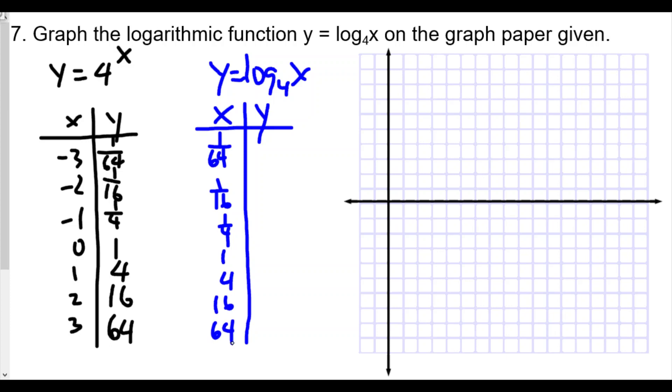We might run out of space here, so we may not be able to actually graph all these points. So 1 over 64, the y value is going to be the x value of y equals 4 of the x. So in this case, we see 1 over 64, y became the x, and the x becomes the y. So we're going to get in this case negative 3, negative 2, negative 1, 0, 1, 2, and 3. We may not be able to graph all those points, but we definitely know where these points come from. So we can find the coordinates for y equals 4 of the x and then just switch the order.